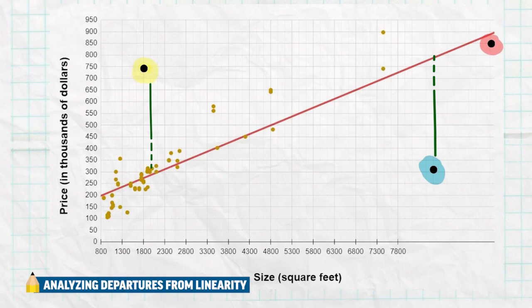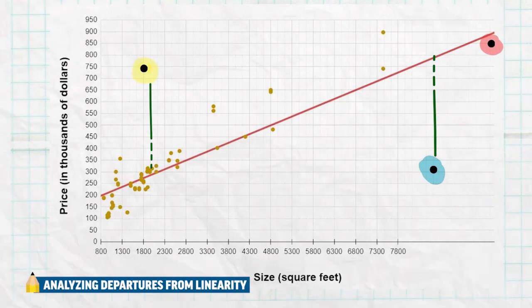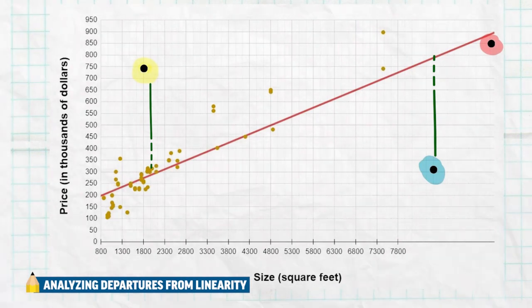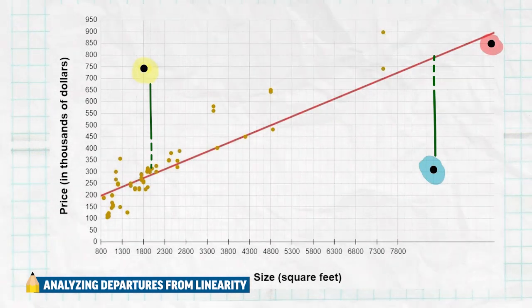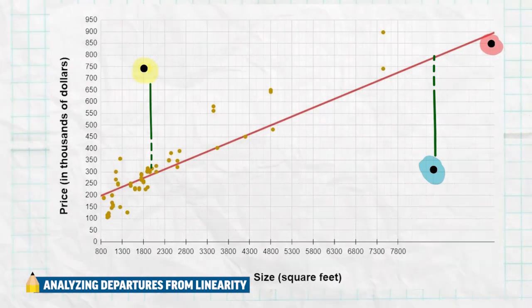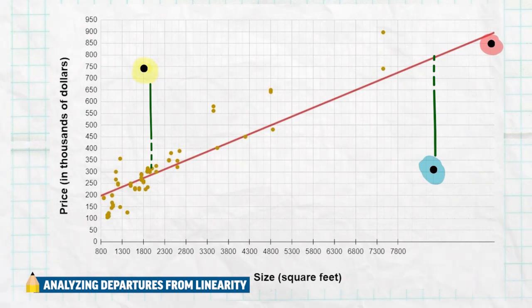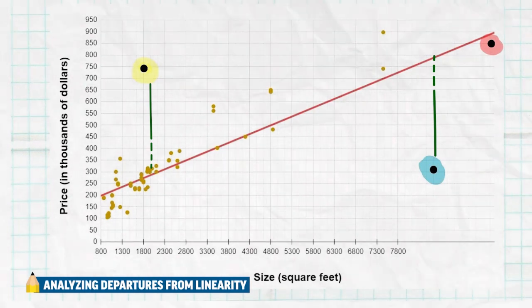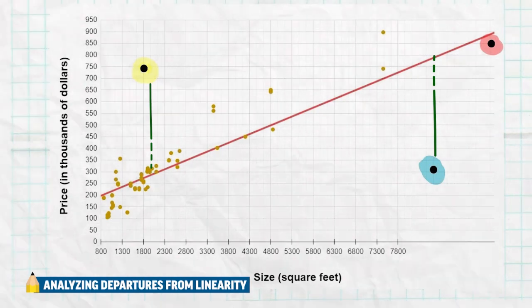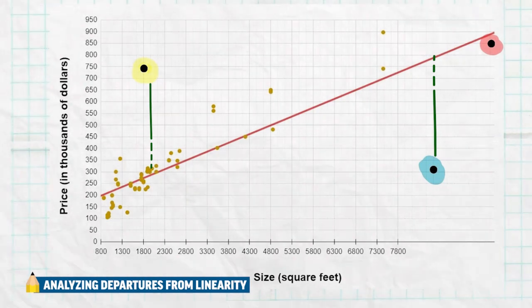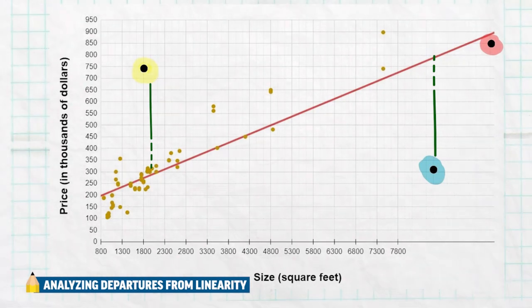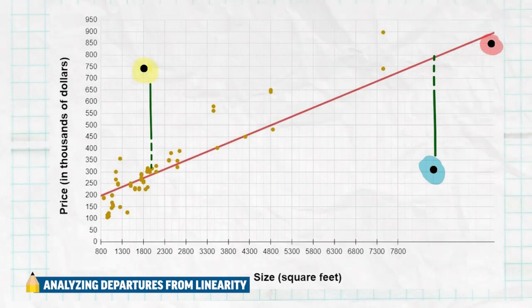But that red point is actually going to strengthen my correlation. Adding it extends the pattern and verifies what the data says — bigger houses have bigger price tags. So that's a good point to add to your data because it extends the pattern and increases your correlation.